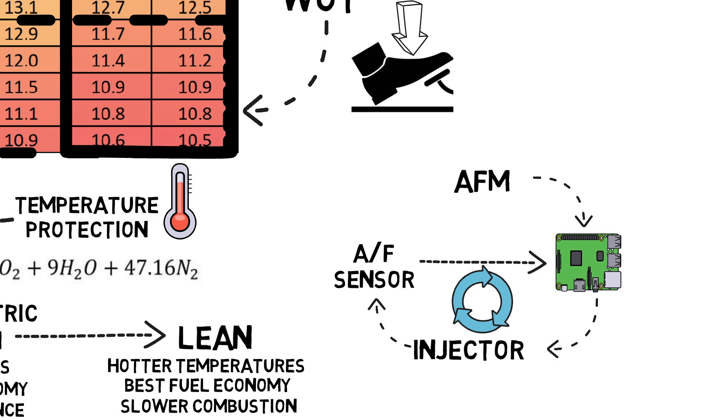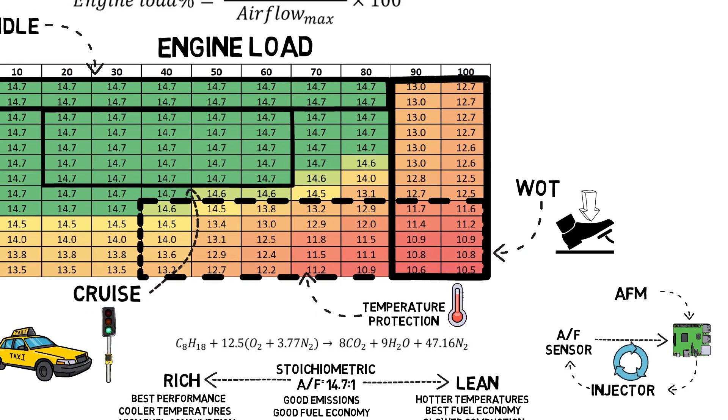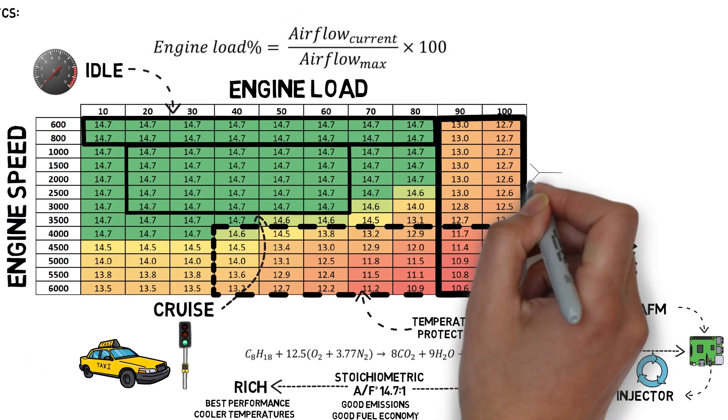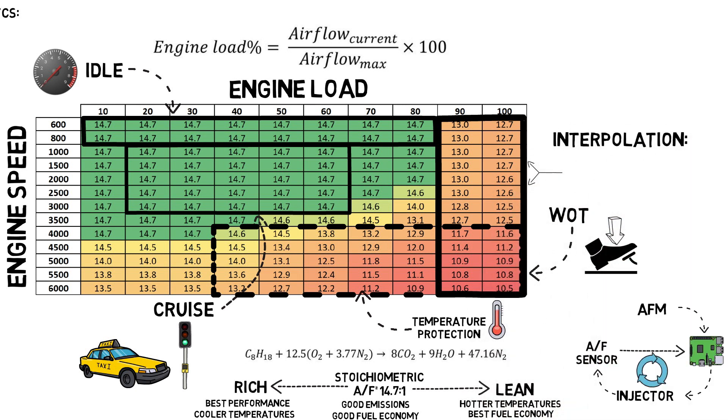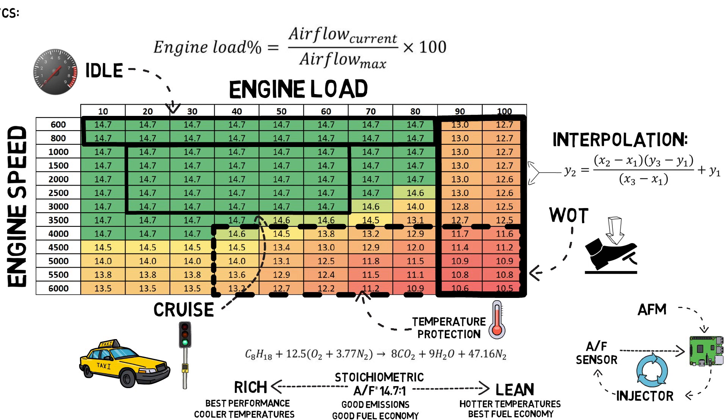One last thing to mention is that if the engine's operating condition falls between two values in the fuel map, for example 1600 RPM at 95% load, the target air-fuel ratio will be interpolated from the neighboring points. This eliminates the need to have an infinite number of values in the table.